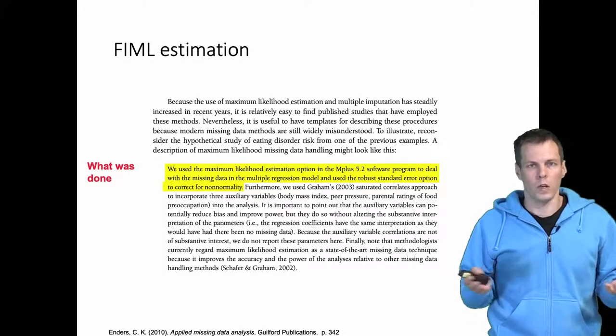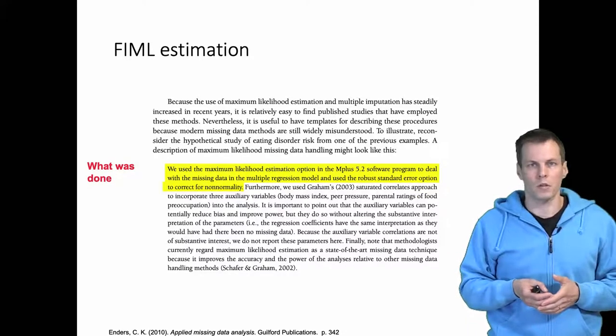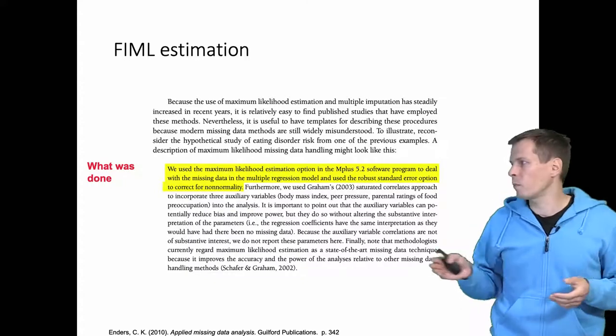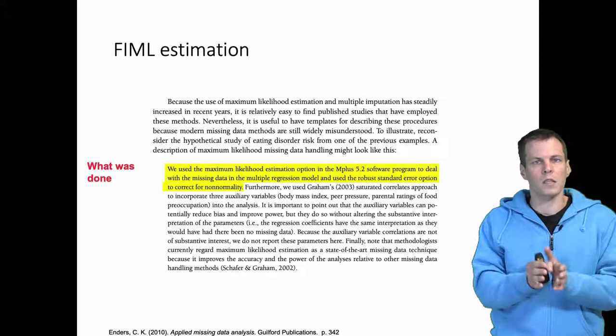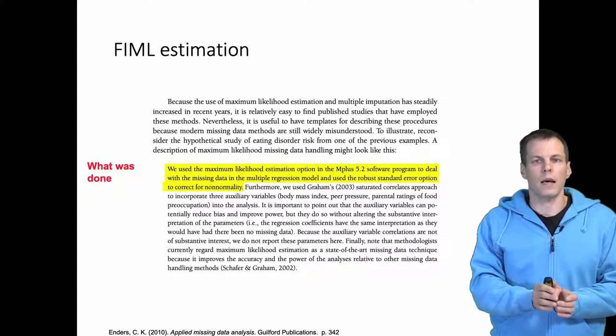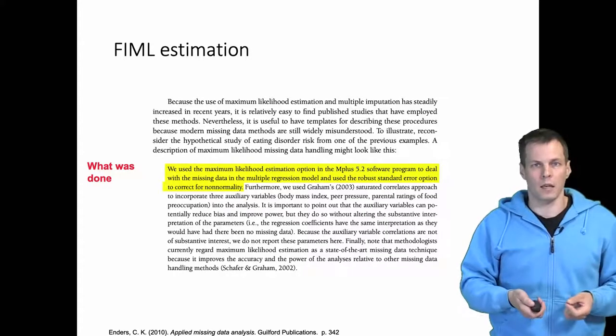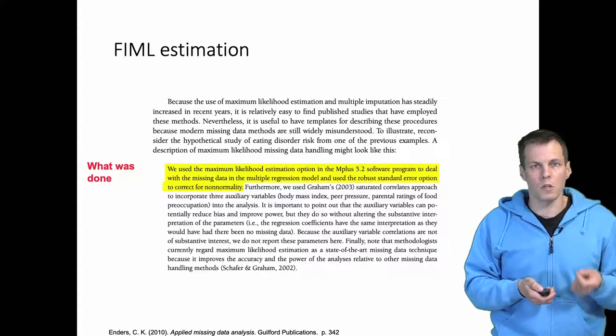He starts by simply explaining what was done. So we used FIML estimation using M plus version 5.2 and robust standard errors options. So simply a description of what was done and then technical details and this analysis uses auxiliary variables.